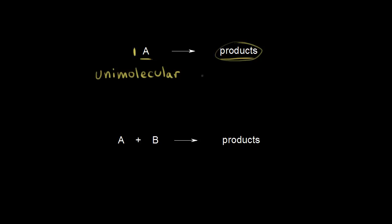Let's think about writing the rate law. When writing rate laws, we write the rate of our reaction is equal to the rate constant K times the concentration of our reactants. Here we have only one reactant, so we say times the concentration of A. For the exponent, we can take the coefficient in our balanced equation and turn that into the exponent — we have a one here, so we make that a one. You can only do this for an elementary one-step reaction, not for an overall equation with a detailed mechanism. So the rate is equal to K times the concentration of A to the first power — this unimolecular reaction is first order in A.